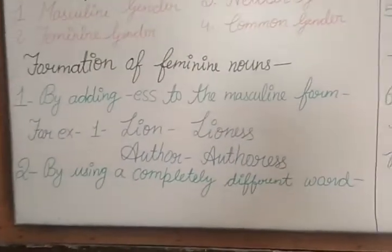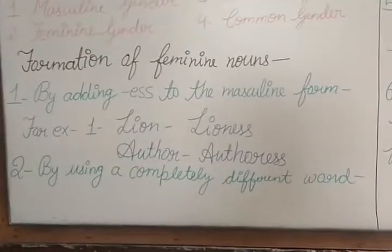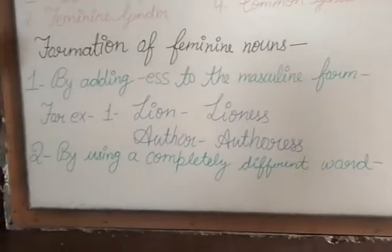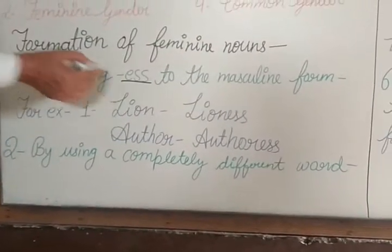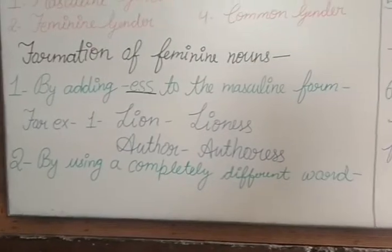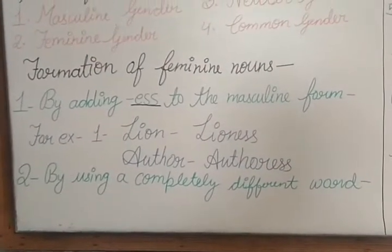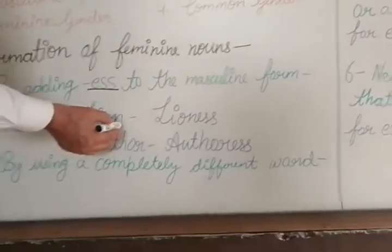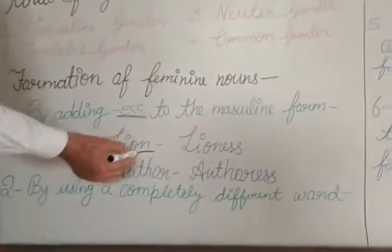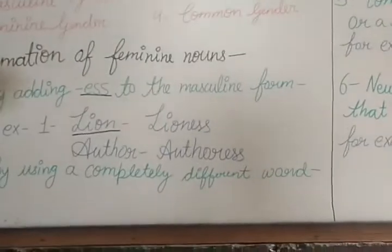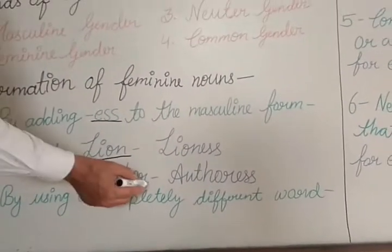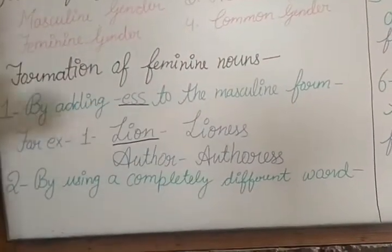Formation of feminine nouns. Feminine nouns are formed by adding '-ess' to the masculine. If I ask you the feminine of 'lion,' it is 'lioness.' Author — authoress.